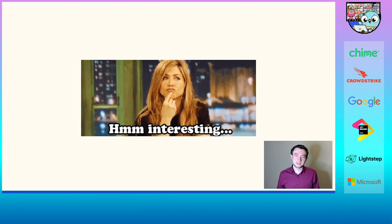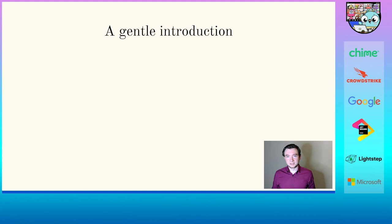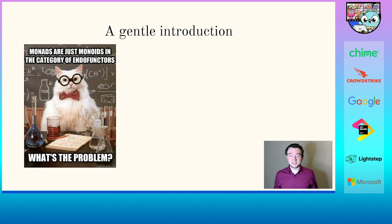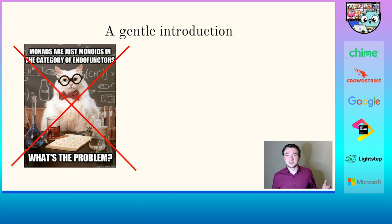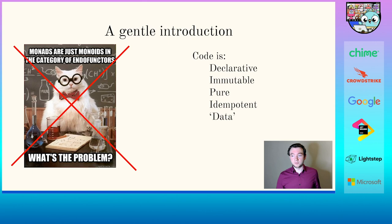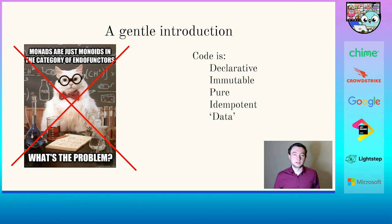Assuming I've convinced you it might be worth looking at functional programming in Go, how do we actually start? If you've looked for introductions, they can be a little bit intimidating. Somebody might tell you monads are just monoids in the category of endofunctors — well, that is a completely useless description. You're not going to make a real program with this, and it's not necessary for understanding functional programming. The first concept I want to focus on is that code should be declarative, immutable, pure, idempotent, and your functions are going to act as data.